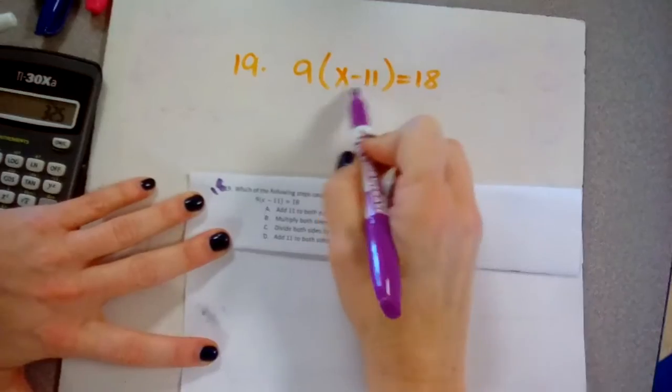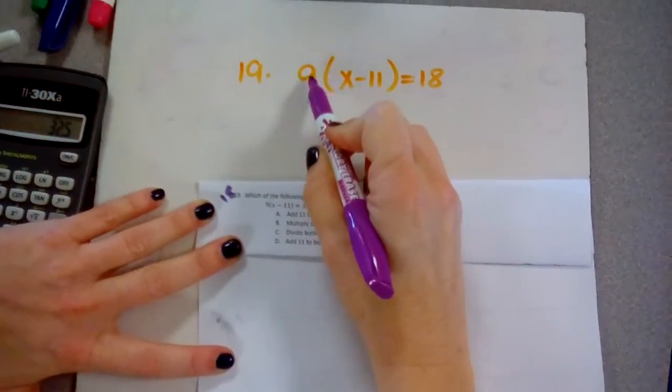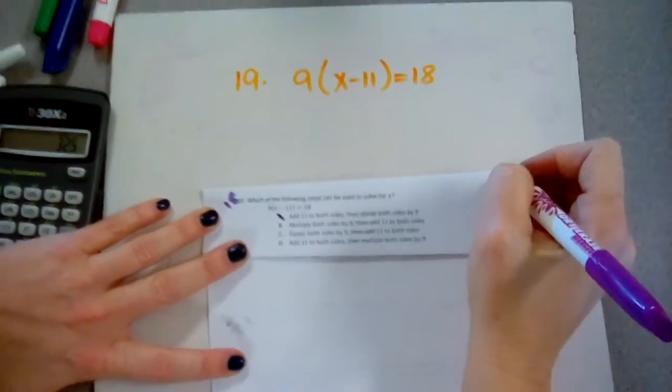No, I cannot. This is trapped inside of my parentheses because my 9 here has to be either distributed or moved before I can get to my 11. So I know that cannot be the answer.